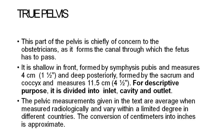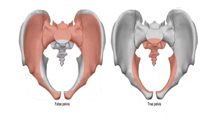True pelvis: This is the part of the pelvis chiefly concerned in obstetrics as it forms the canal through which the fetus has to pass. It is shallow in front — formed by the symphysis pubis and measures 4 cm — and deep posteriorly — formed by the sacrum and coccyx and measures 11.5 cm. For descriptive purposes it is divided into inlet, cavity, and outlet. The diagram shows the false pelvis in red and the true pelvis in brown.